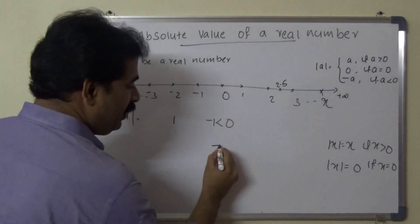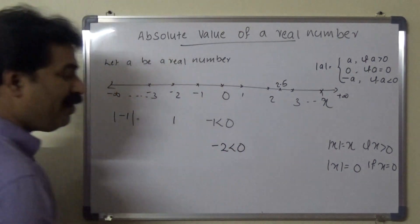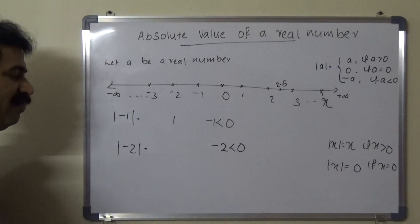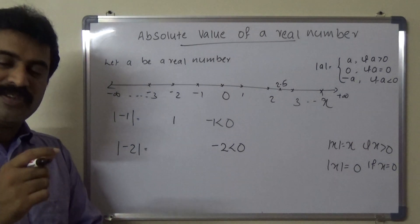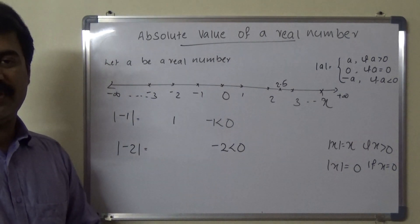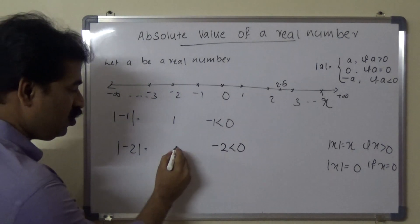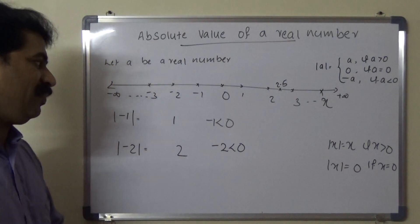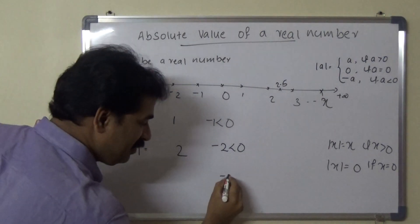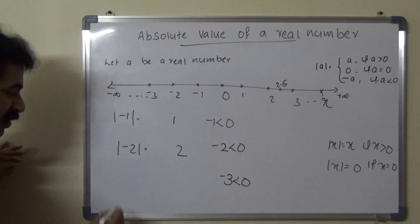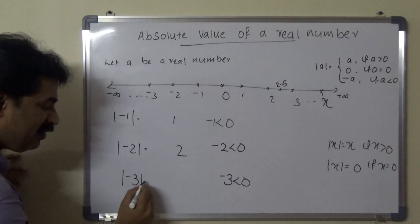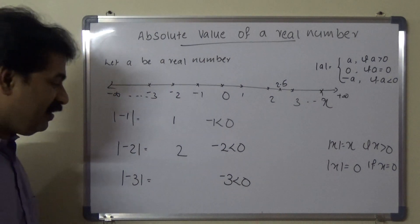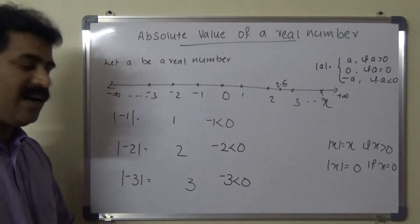Next, minus 2 is a negative real number. The absolute value of minus 2 is the distance between 0 and minus 2, which equals 2. Similarly, the absolute value of minus 3 is the distance between 0 and minus 3, which equals 3.